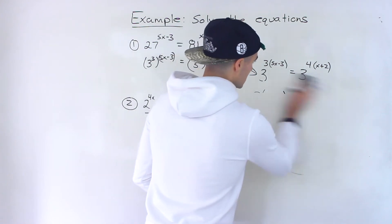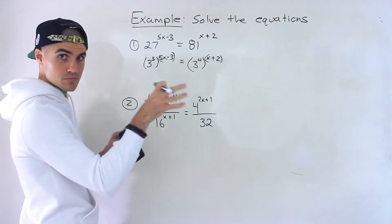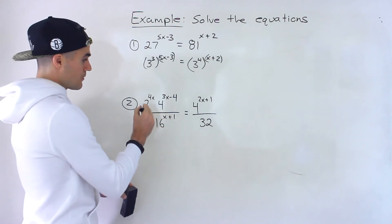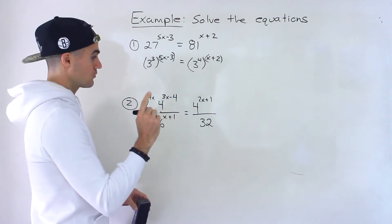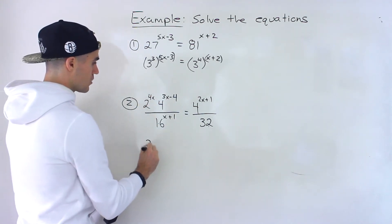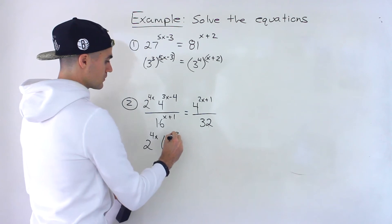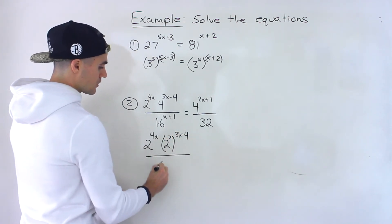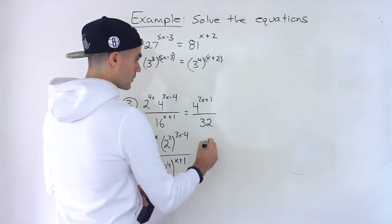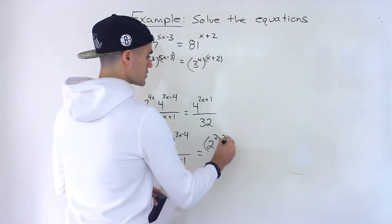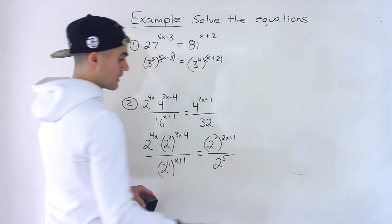Moving on to number two, it's going to be a little bit more complex, but the same thing applies — we want to get it in terms of one base on each side. Notice that we have 2, 4, 16, 32. All of those we can rewrite in terms of a base 2. So the 2 is already in terms of that base. The 4, we can rewrite as 2 to the power of 2, and then we have 3x minus 4. The 16, we can rewrite as 2 to the power of 4, and we have x plus 1. The 4 here, we can rewrite as 2 to the power of 2, with 2x plus 1. And the 32, we can rewrite as 2 to the power of 5.